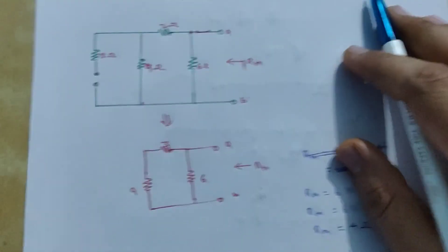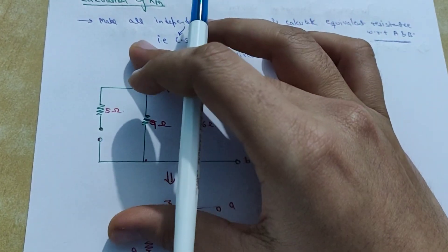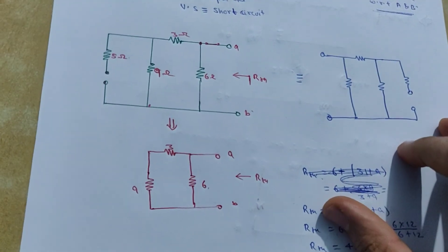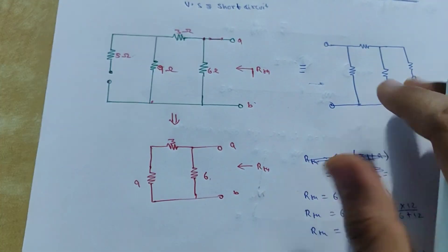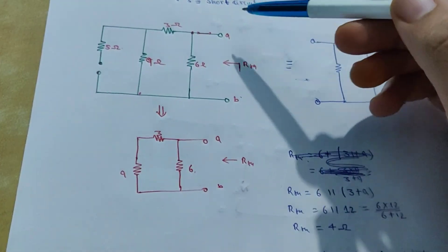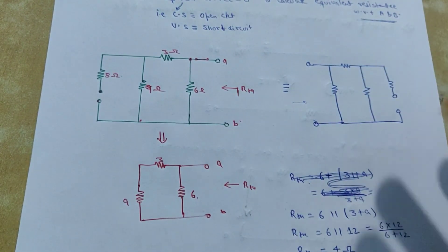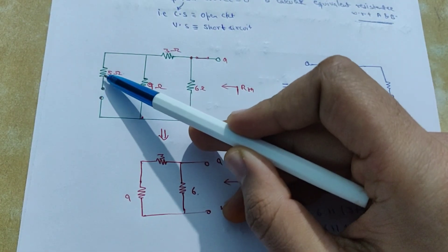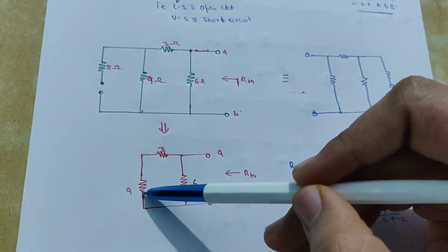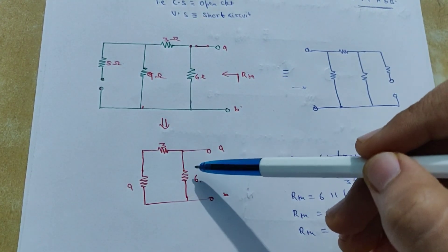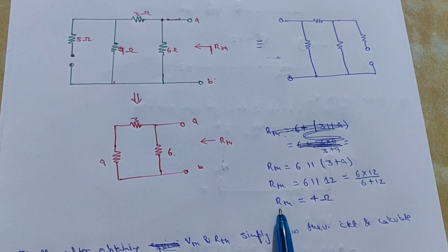We calculate the equivalent resistance with respect to AB, meaning the resistance looking between these two ports. Since this branch is open circuited, the 5-ohm resistance will not be counted. Redrawing the circuit without the 5-ohm resistance: 3 ohms and 9 ohms are in series, giving 12 ohms, and 12 ohms is in parallel with 6 ohms. RTH comes out to be 4 ohms.